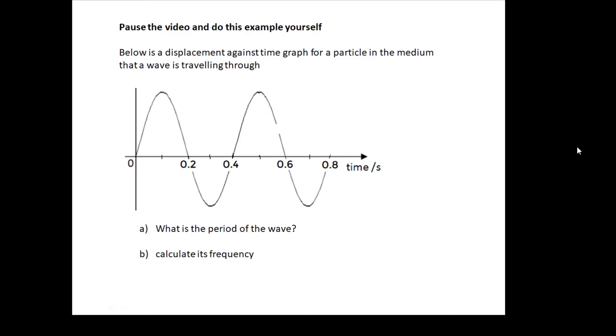Now, on all of these videos, I'm going to give you a few examples for you to do. And what I'd like you to do is to pause the video and do it yourself. So pause the video now and do this for yourself. I'll put the answer up in about 3 seconds. And here's the answer. So the period we read off the graph is 0.4 seconds. And the frequency is 1 over the period. And that's 2.5 hertz.